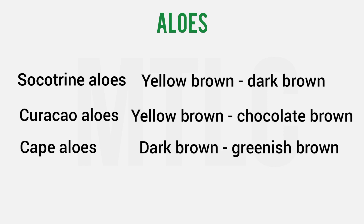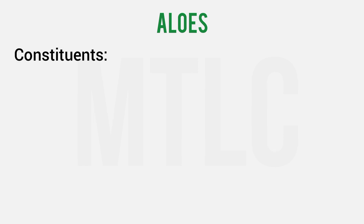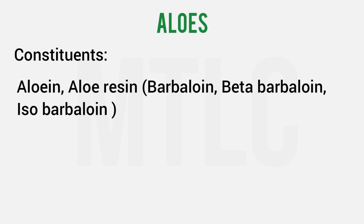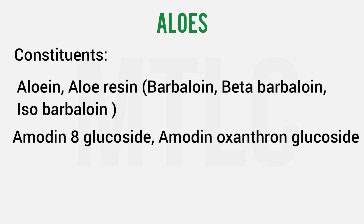The constituents of aloes: the main constituents are aloin and aloe-emodin. These include barbaloin, beta-barbaloin, and iso-barbaloin — these three. Apart from that, emodin-8-glucoside and emodin oxanthrone glycoside are also present in aloes.